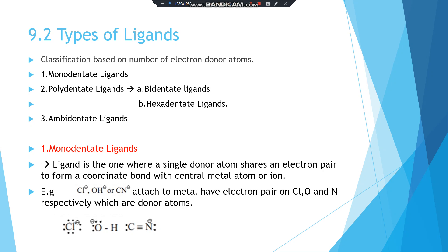A monodentate ligand is one where a single donor atom shares an electron pair to form a coordinate bond with the central metal ion. For example, Cl⁻, OH⁻, and CN⁻ are ligands attached to the metal having electron pairs on Cl, O, and N respectively, which are the donor atoms. In these structures, Cl is a donor atom and O from OH is a donor atom.